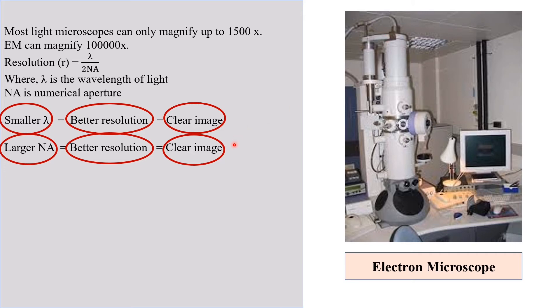Here you may become confused that smaller lambda and larger NA gives smaller R value than larger lambda and smaller NA. But remember, smaller R value is actually needed for better resolution because smaller the R value, we can differentiate two points which are more close to each other. In this case, smaller R value means better resolution.